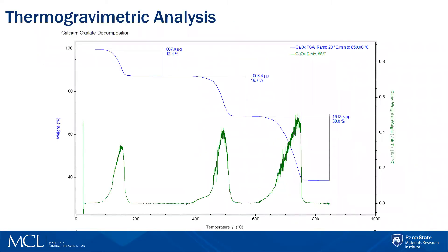Here is a well-known example: calcium oxalate. In this test, the sample was heated at 20 degrees C per minute up to 850 degrees Celsius. We can observe three main weight loss steps. Each of them is quantitative and helps us to understand the thermal breakdown of this material.